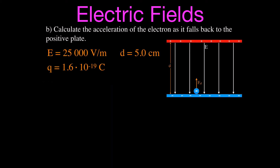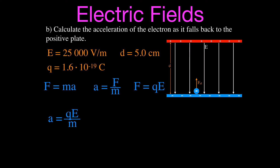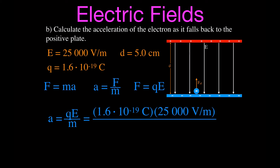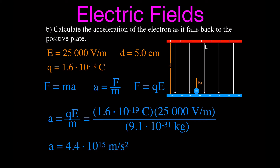For part B, we calculate the acceleration. The electron at the negative plate is repelled and accelerated through the homogenous electric field. Using a = QE/m, the charge is 1.6 × 10⁻¹⁹ C, the electric field strength is 25 V/m, and the mass of the electron is 9.1 × 10⁻³¹ kg. This gives an acceleration of 4.4 × 10¹⁵ meters per second squared — a constant acceleration through the homogenous electric field.